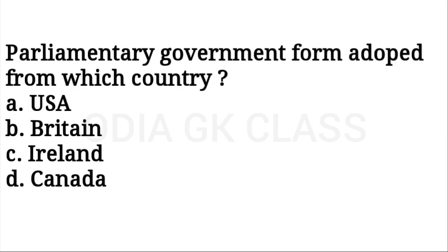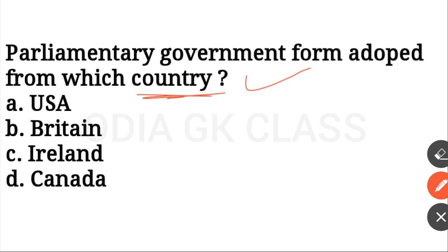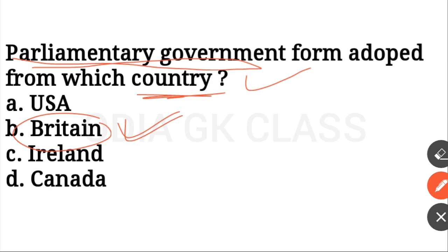Next question: the Parliamentary Government form was adopted from which country? India has a parliamentary form of government adopted from Britain. Under this system there are two heads: a nominal head, which is the President, and an actual head, which is the Prime Minister. Britain also gave India single citizenship and bicameralism.